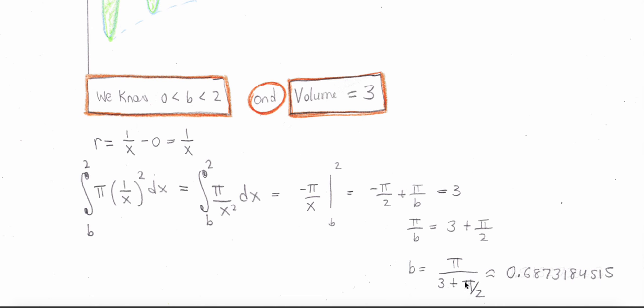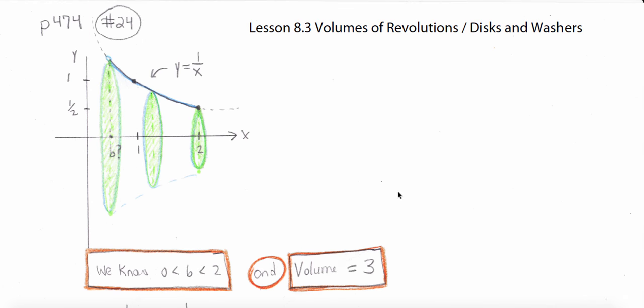So if b is this value, then the volume of the solid generated by revolving around the x-axis is 3.